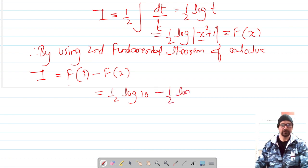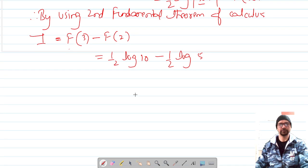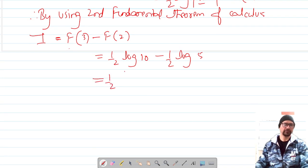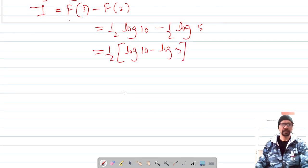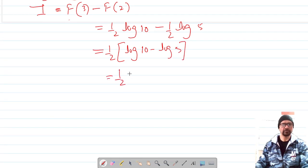the value of the function at 2, which is log 5. Now if half is common, it's log a minus log b, and log a minus log b is log a upon b, which is half log 2.